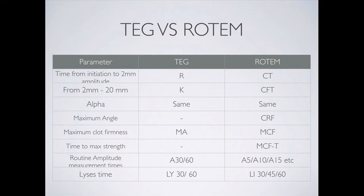I have not seen good literature on the utility of more amplitude time points yet — I'm sure we'll eventually learn something from them. For now, I don't know what to do with a deviation at A10 versus A30 versus A60. Similarly with lysis time: I know that at LY30, a significant amount of depletion triggers tranexamic acid, but I don't yet understand the nuance of LY30 versus LY45 versus LY60, and in our trauma bay those finer distinctions get put on the back burner.